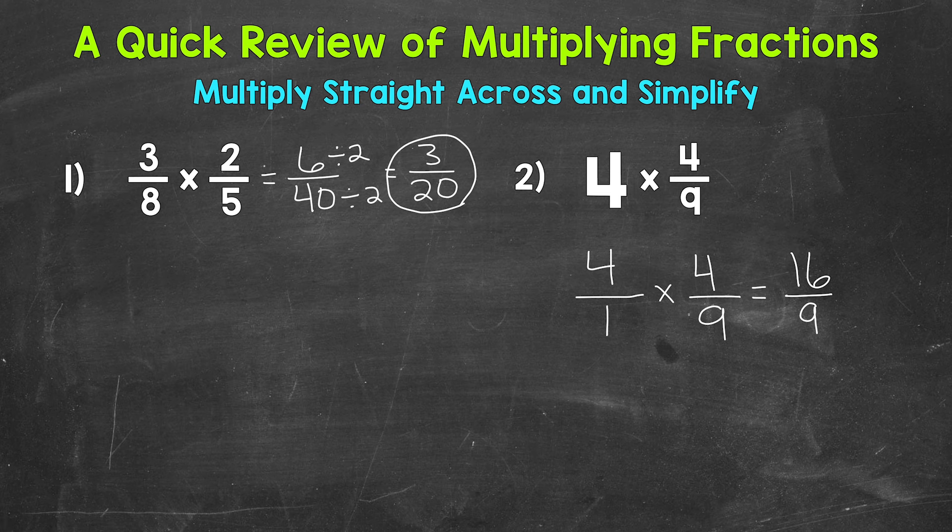So, 16 divided by 9. So, we need to think, how many whole groups of 9 are in 16? Well, 1. That gets us to 9. And we have a remainder of 7. So, that's our numerator of the fractional part. And then we keep our denominator of 9 the same. So, 1 and 7 ninths is our final answer.